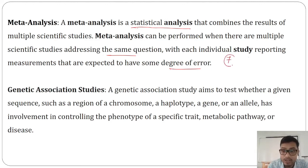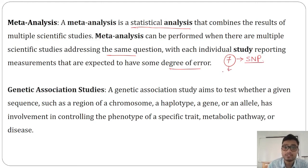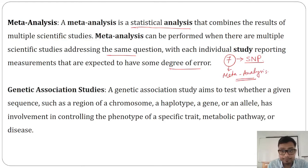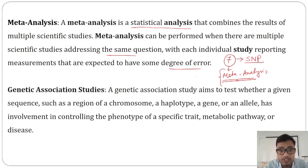For example, let us assume we have seven publications for a particular SNP — Single Nucleotide Polymorphism. We combine those seven studies in our meta-analysis and publish the result. By doing this meta-analysis, we can ultimately assess publication bias from the funnel plot and determine whether those genetic association studies are good or not.